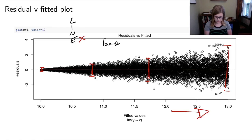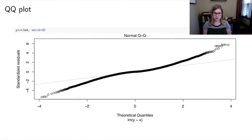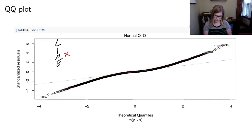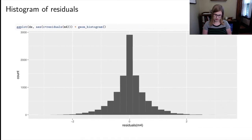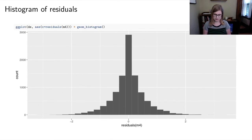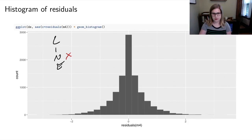Fan-shaped residuals are the biggest clue for an equality of variance violation. Even though this data was simulated to violate only the E condition, the normality condition is also being violated — the QQ plot shows data pulling away from the line above and below. The histogram is too concentrated around the mean, confirming a normality violation as well. Those are the conditions of linear regression.